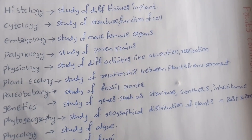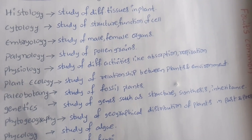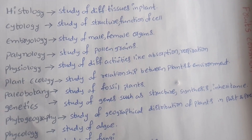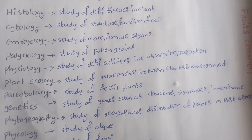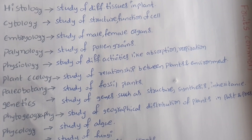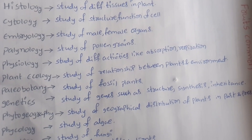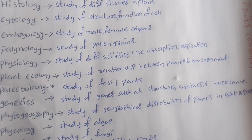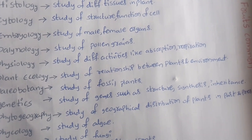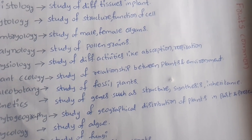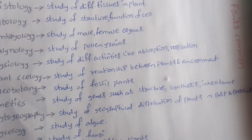Paleobotany — the study of fossil plants. Genetics — the study of genes, such as their structure, synthesis, and inheritance. Phytogeography — the study of geographical distribution of plants in the past and present.